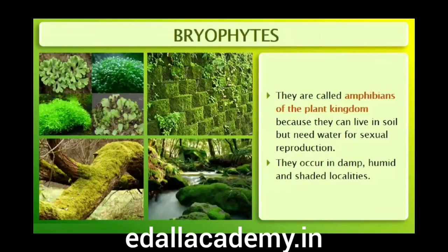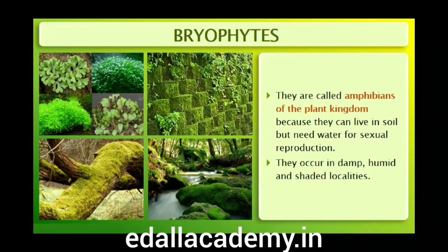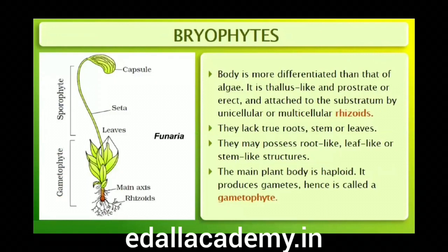Bryophytes include the various mosses and liverworts that are found commonly growing in moist shaded areas in the hills. Bryophytes are also called amphibians of the plant kingdom because these plants can live in soil but are dependent on water for sexual reproduction. They usually occur in damp, humid and shaded localities.